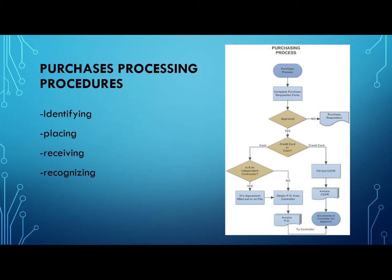Purchases and Cash Disbursement Procedure includes the tasks involved in identifying inventory needs, placing the order, receiving the inventory, and recognizing the liability. In general, these procedures apply to both manufacturing and retailing firms. A major difference between the two business types lies in the way purchases are authorized. Manufacturing firms purchase raw materials for production and their purchasing decisions are authorized by the production planning and control function. The inventory control function provides the purchase authorization for this type of firm.